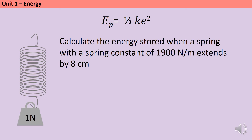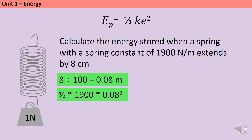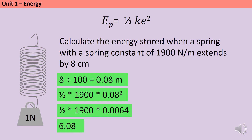For another example: a spring constant of 1900 newtons per metre and an extension of 8 centimetres. It's really important that extension is always in metres, so convert by dividing by 100: 8 centimetres is 0.08 metres. Putting this into the equation: 0.08 squared is 0.0064, so ½ × 1900 × 0.0064 gives an answer of 6.08 joules.